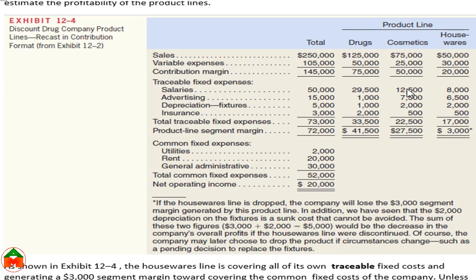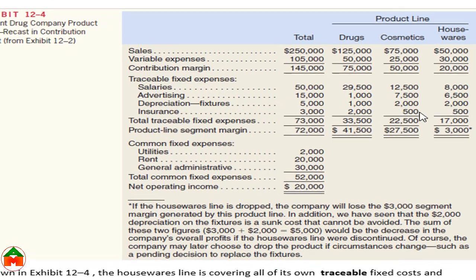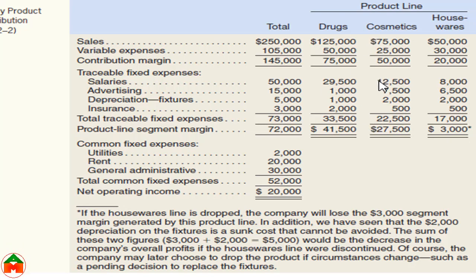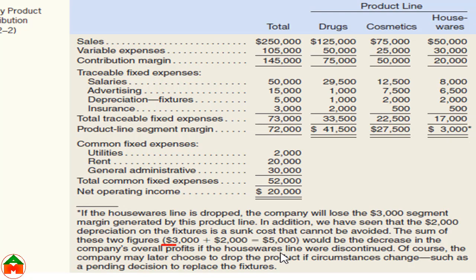Alternatively, to show that the Housewares product should not be dropped, only the relevant costs should be shown in segment reporting, and common costs should be deducted from the total. In this segment reporting format, the relevant costs and benefits are shown segment-by-segment, and common costs are deducted from the total. We can see that Housewares generates $3,000 to $2,000, totaling $5,000 profit, confirming we should not drop the product from the product line.